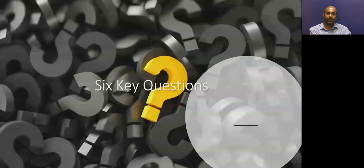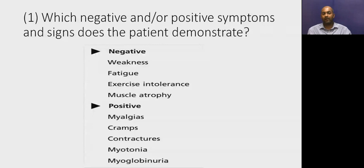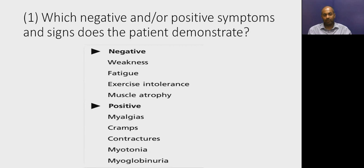In history taking for muscle diseases, there are six key questions to ask. The first question is: which negative and/or positive symptoms does the patient demonstrate? Muscle disorders can present with negative symptoms — weakness, fatigue, exercise intolerance, and atrophy — or with positive symptoms like myalgia, cramps, contracture, myotonia, and myoglobinuria. We must ask about all of these in each case.